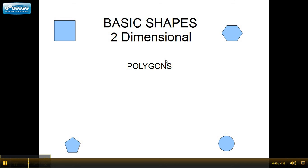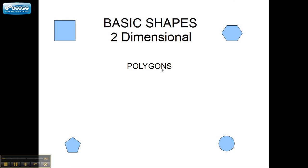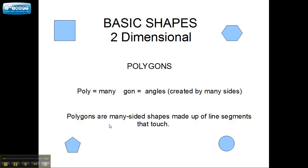Generally speaking, these basic shapes are called polygons. Poly means many, and gon means angles. And the angles are created by many sides. You can see they have many sides here. Polygons are many-sided shapes made up of line segments that touch. As you can see, all these line segments touch, and that creates our shapes.